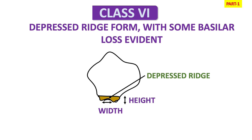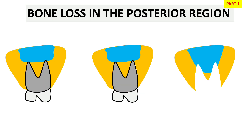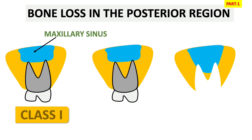Class 5 and Class 6 ridges are the classic ridge forms for using the McCord technique of impression. We can also use the McCord technique in Class 4. Now, regarding bone loss in the posterior region and the classification of the edentulous jaw in the posterior region — as you can see in the figure, the first is Class 1, and in blue we have the maxillary sinus.